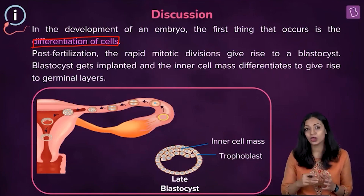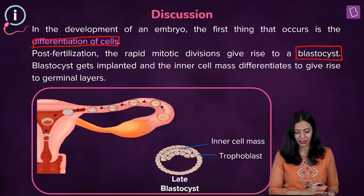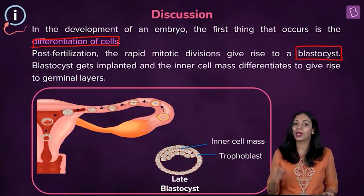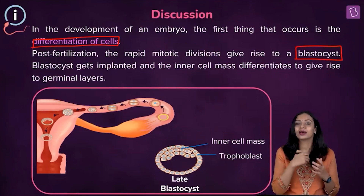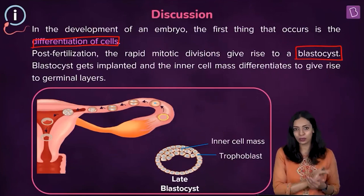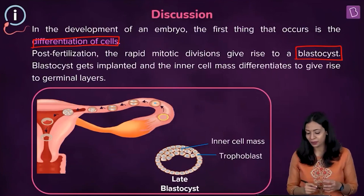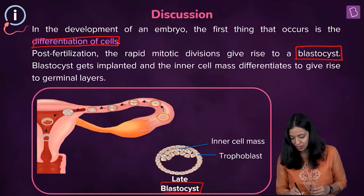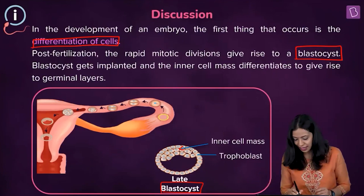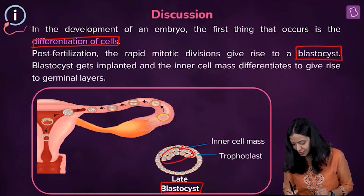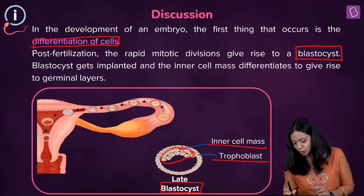The morula will eventually give rise to an embryonic stage known as the blastocyst, which gets implanted or embedded within the endometrium layer of the uterine wall by a process known as implantation. Within this blastocyst, you can find a group of cells known as the inner cell mass and an outer layer of cells known as the trophoblast.